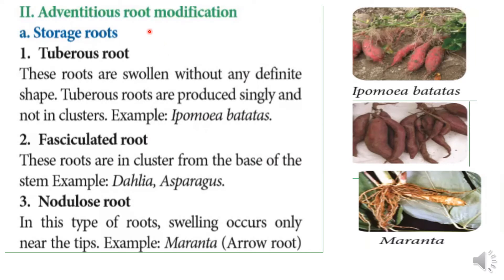In Adventitious Root Modification, Storage Roots come first. Tuberous Root: these roots are swollen without any definite shape. The roots occur in a single form, not in clusters. So this is a Tuberous Root. For example, Ipomoea batatas (sweet potato).